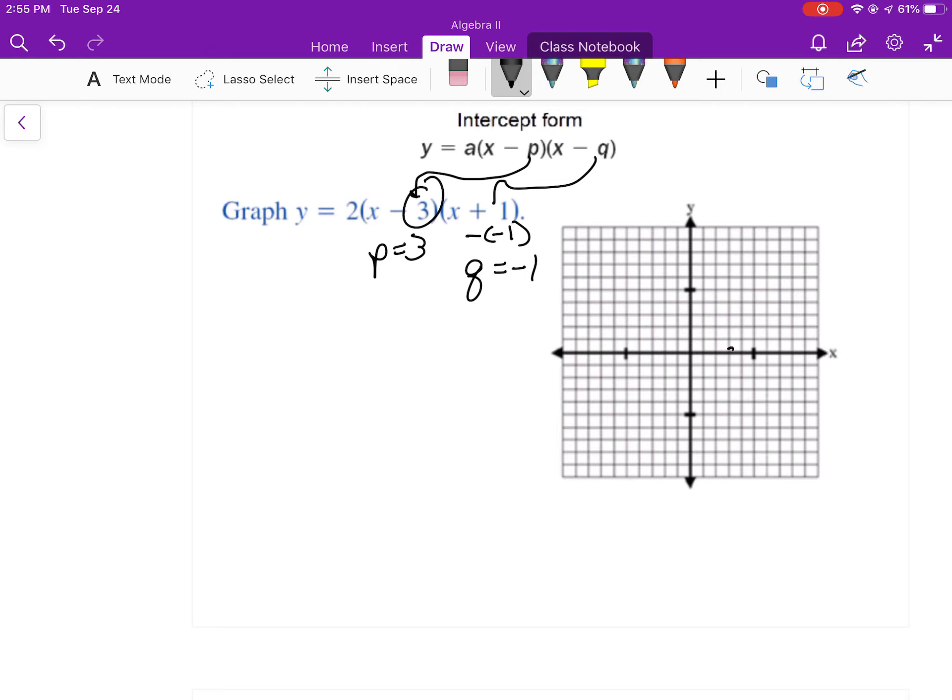That's going to tell me that it crosses the x-axis at 3, 0, and at negative 1, 0. Well these things are symmetrical. So the vertex is in the middle.